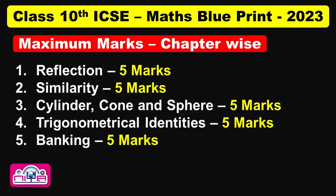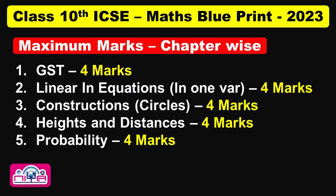Chapters such as Banking, Reflection, Similarity, Cylinder, Cone and Sphere, and Trigonometrical Identities had 5 marks questions each. GST, Linear Inequations, Matrices, Constructions, Heights and Distances, and Probability had questions for 4 marks each.